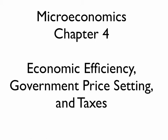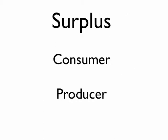Welcome back to microeconomics. We're going to do Chapter 4. We're going to cover economic efficiency, government price setting, and taxes. First thing we want to talk about is economic surplus, or what we just call surplus. There are two sides to that — consumer surplus and producer surplus.